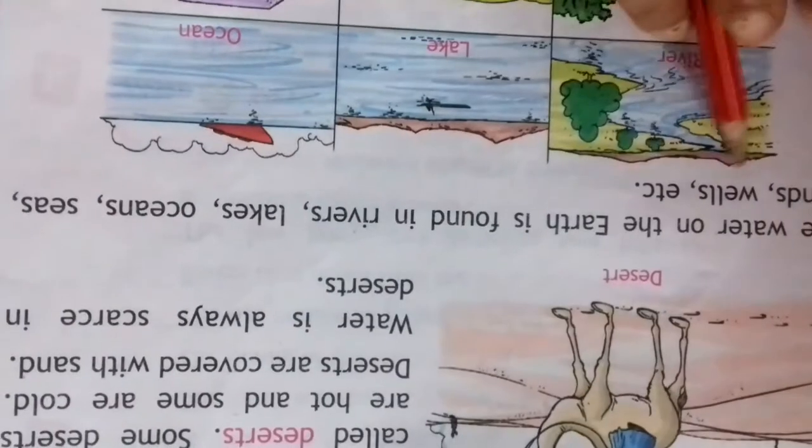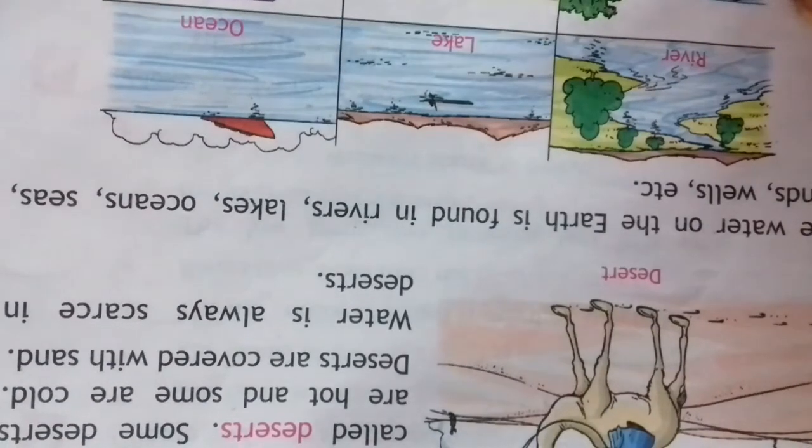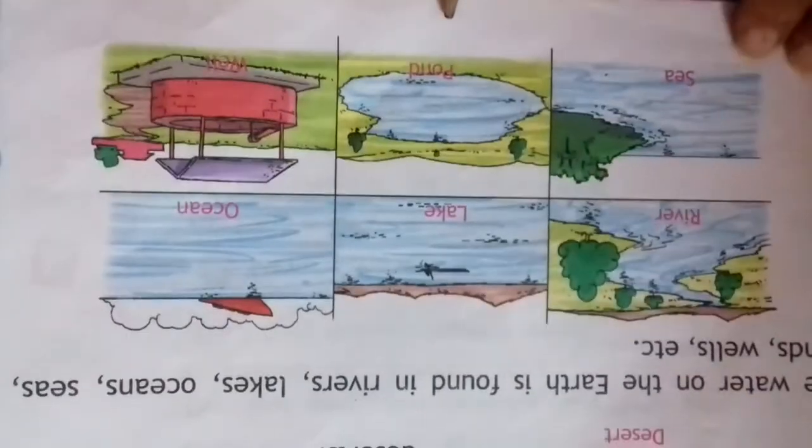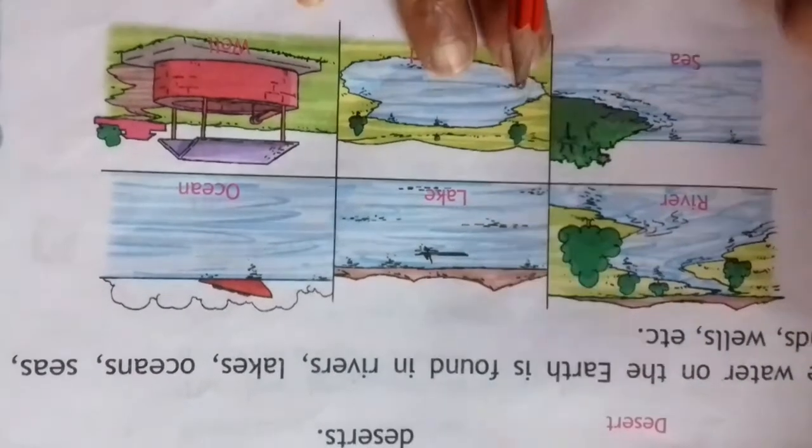The water on Earth is found in rivers, lakes, oceans, seas, ponds, and wells. These names and pictures are the sources of water. Here we get water for drinking.